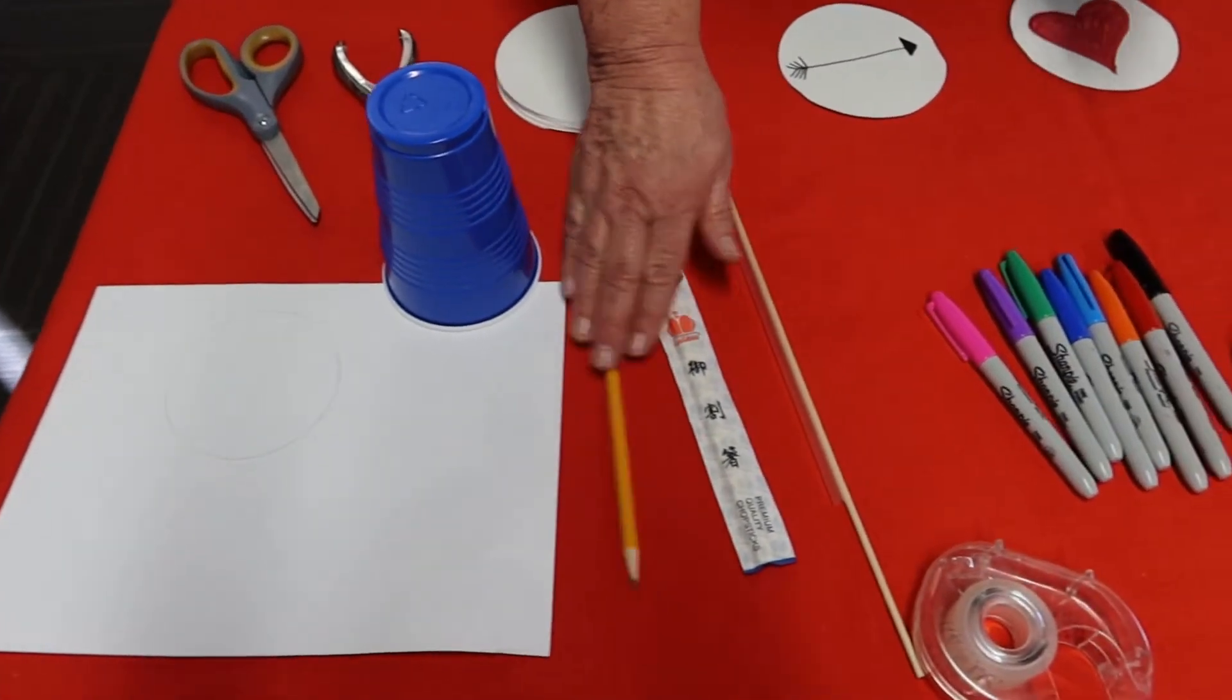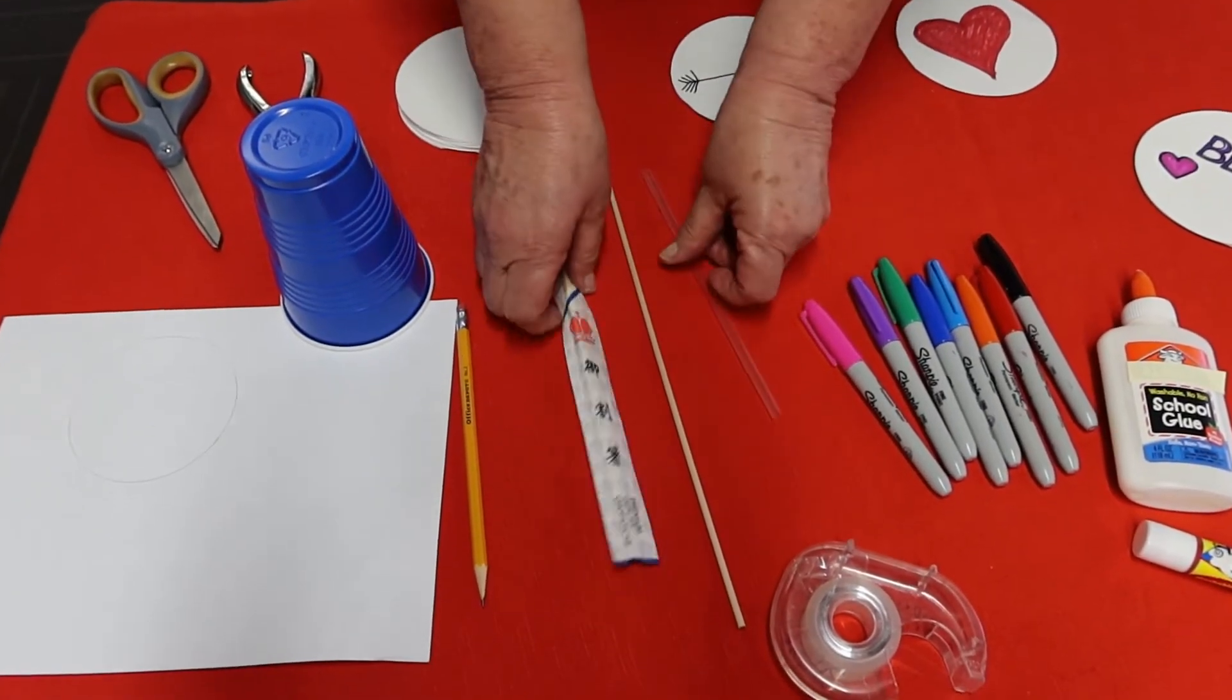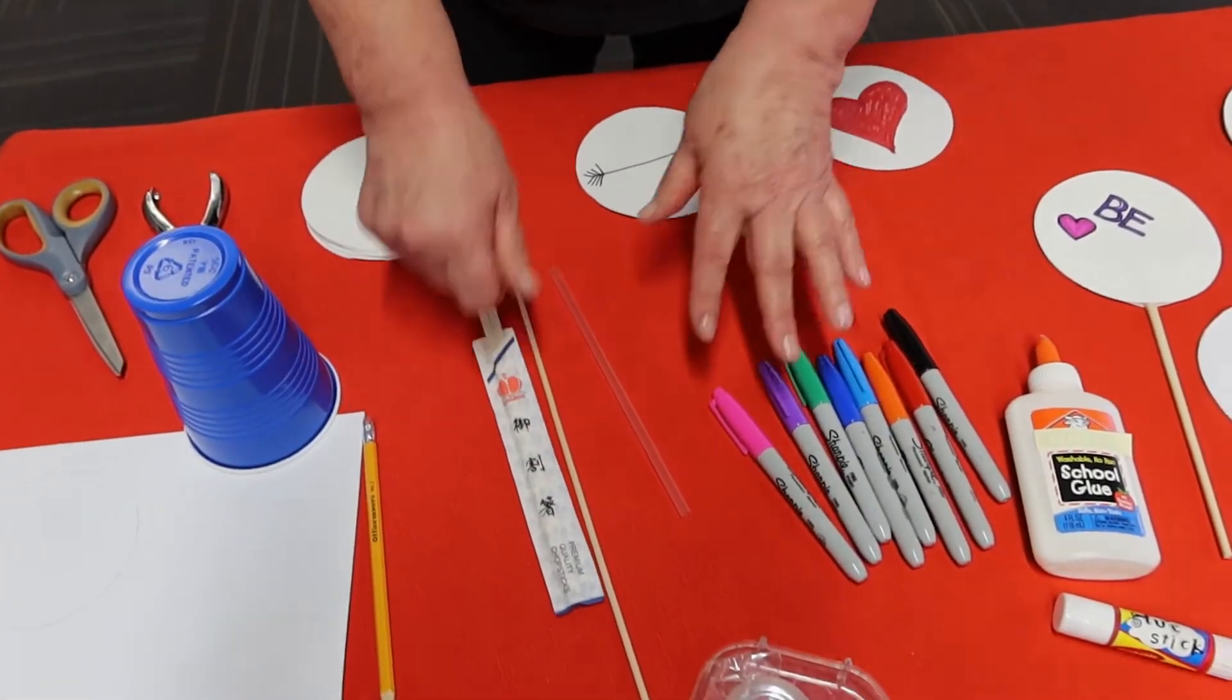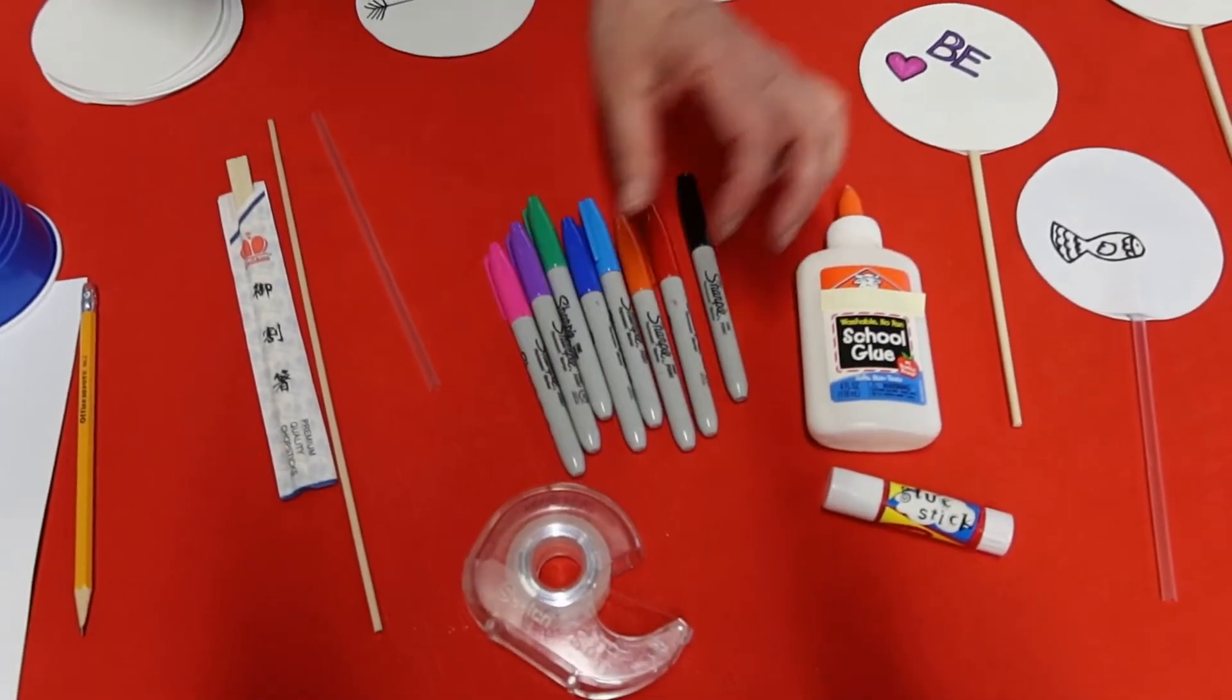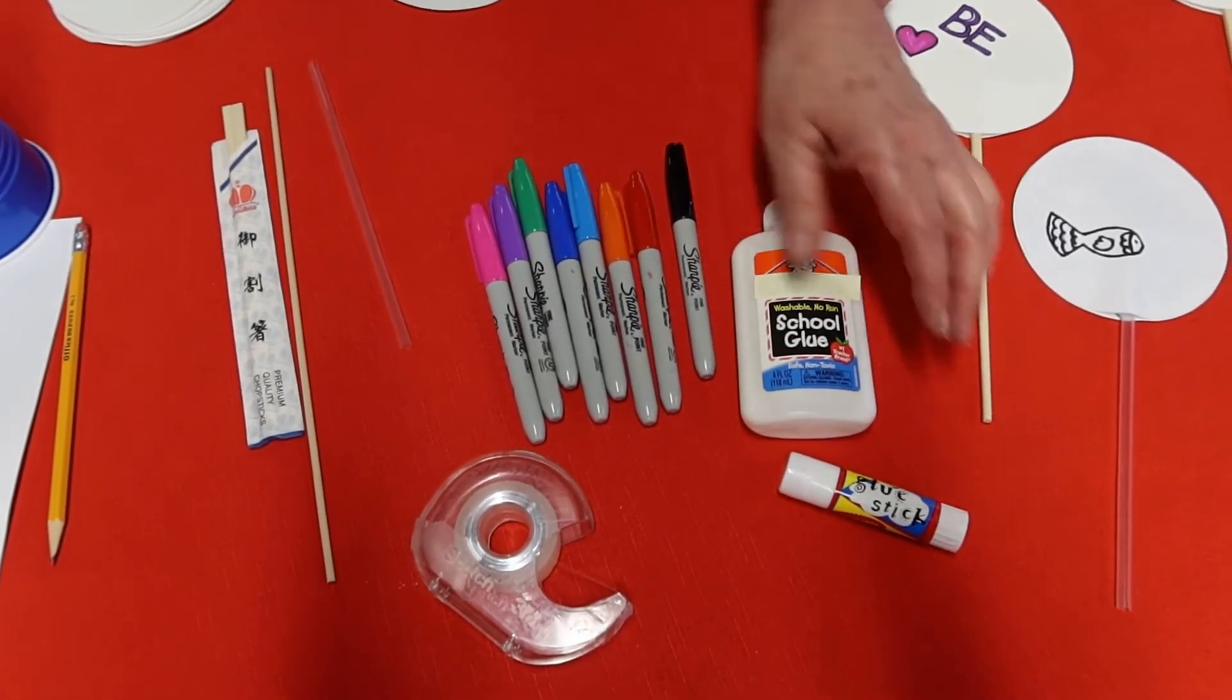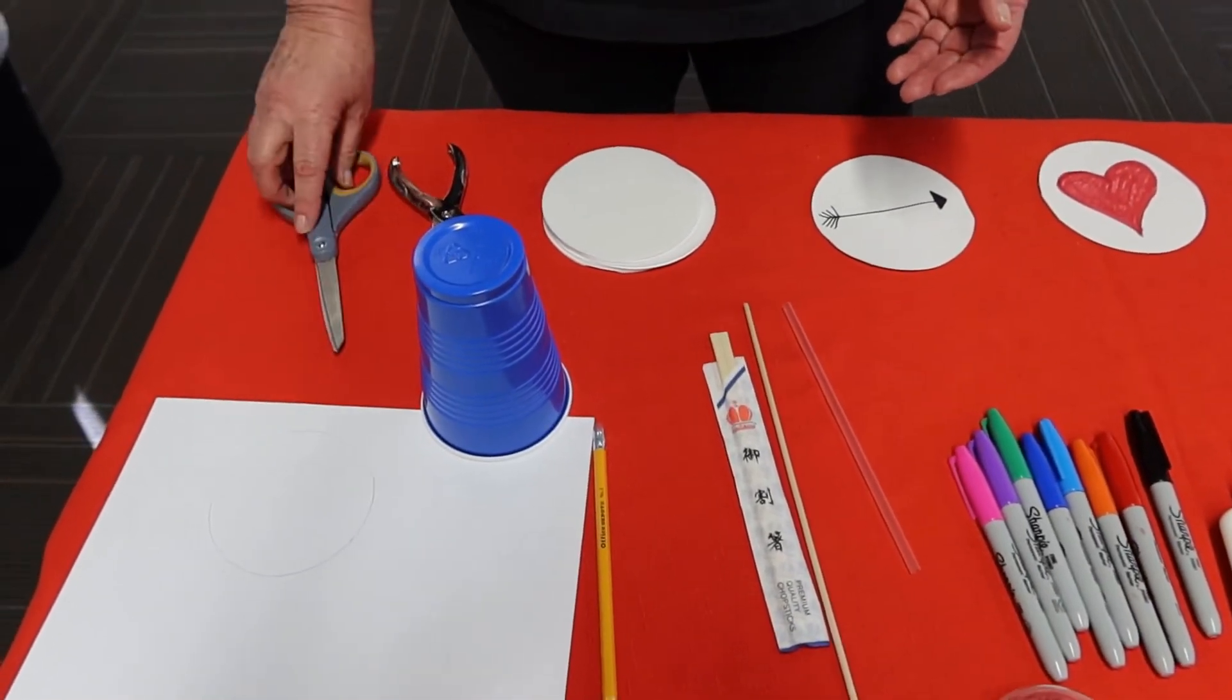You'll need a pencil, and then you can use a dowel stick, a straw, or even some chopsticks. You'll need some different colored markers, scotch tape, and some glue or glue stick. That's essentially all you'll need, and a pair of scissors too.